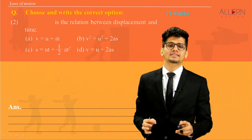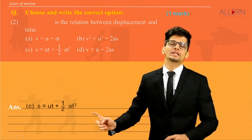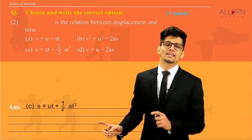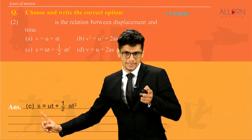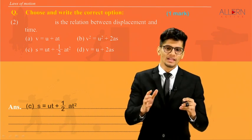I hope you found the answer and the answer is C, that is S is equal to ut plus half at square, which is the second equation. First letter S, displacement, last letter T, that is time.